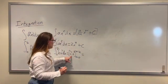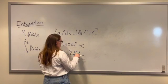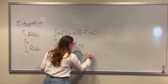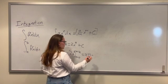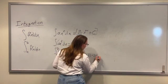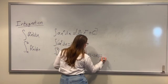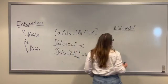So this becomes 2 times 2 cubed, which is 8, minus 2 times 0 cubed, which is 2 times 0, which is 0. And so then this is equal to 16.